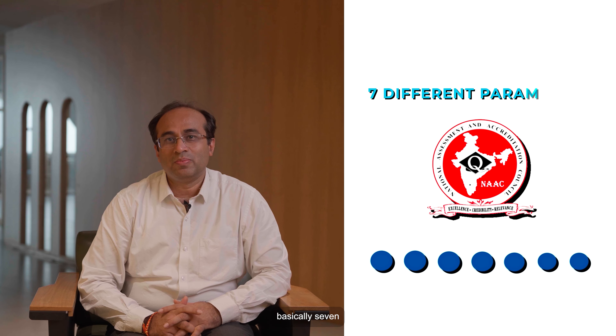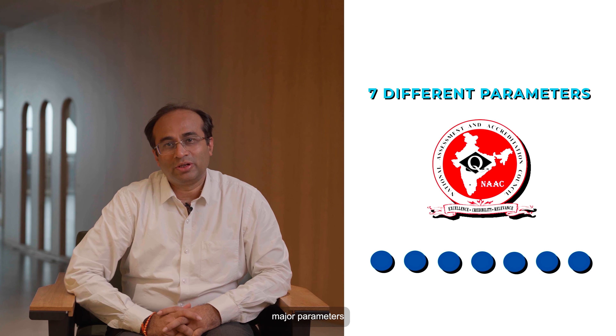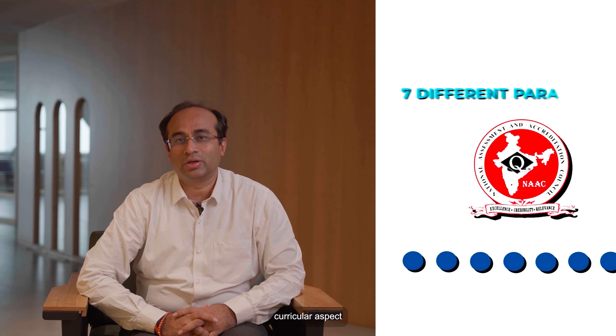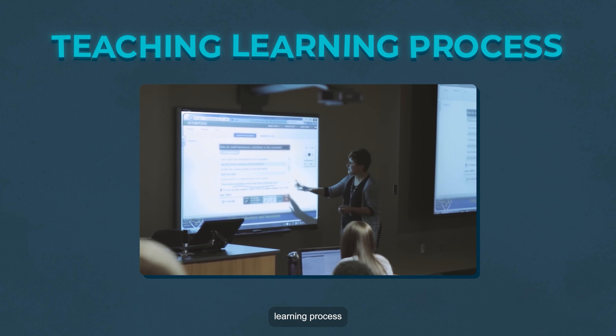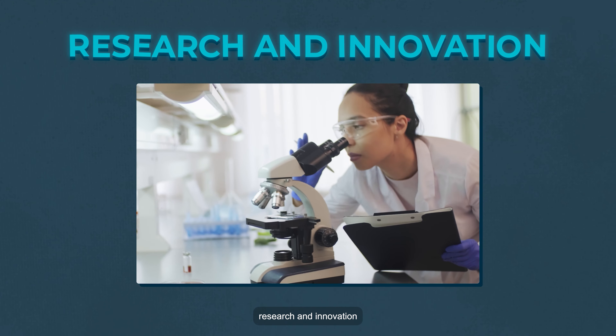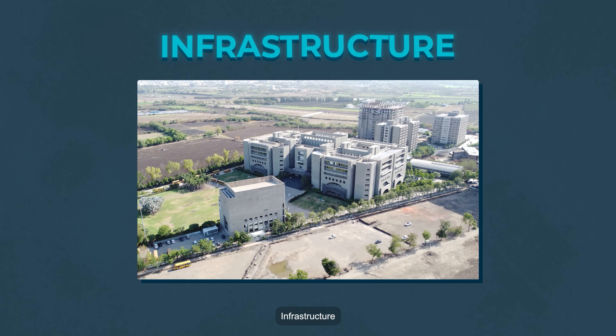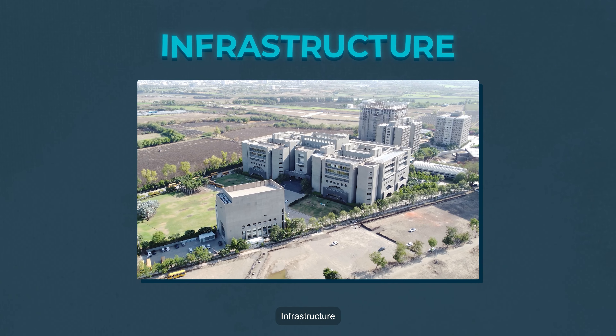NAAC has basically seven major parameters on which the assessment happens. The first is curricular aspect, second is teaching-learning process, research and innovation, student progression, infrastructure, and best practices. Each and every criteria has different sub-parameters.